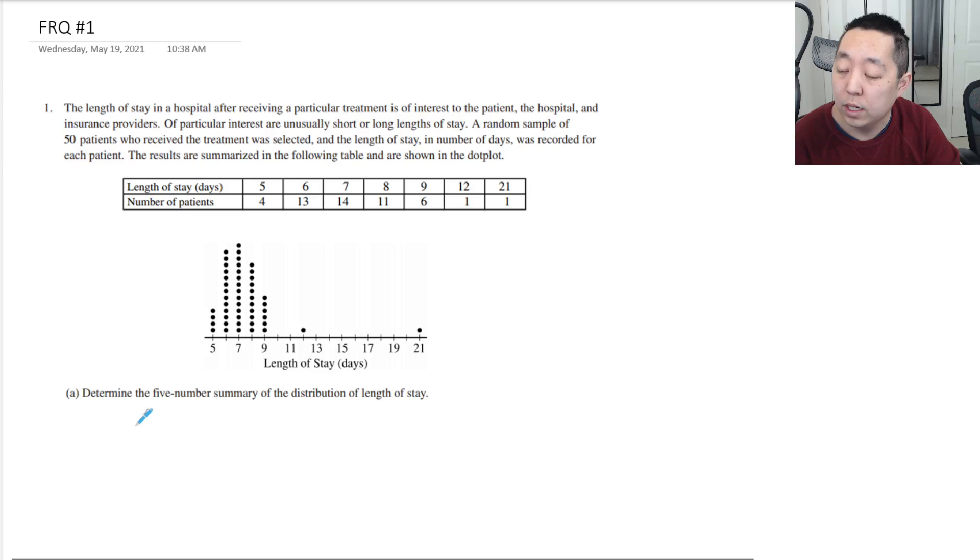Okay, so when they say five-number summary, we want the min, the Q1, Q2 or the median, the third quartile, and the max. Okay, so the minimum value looks like five.